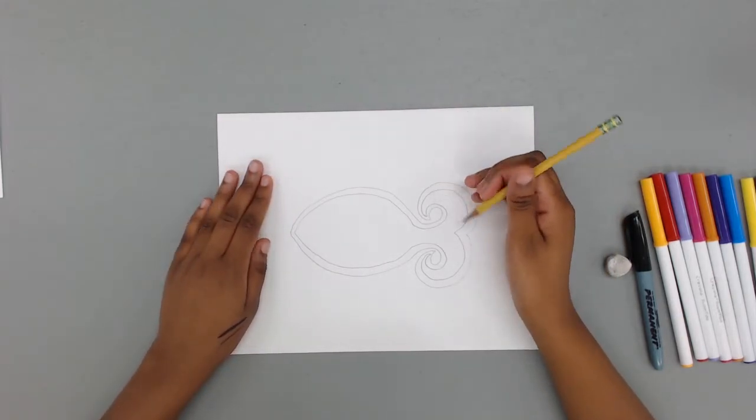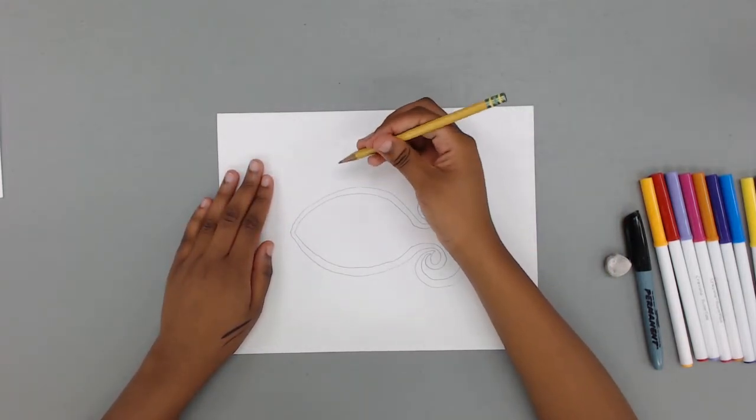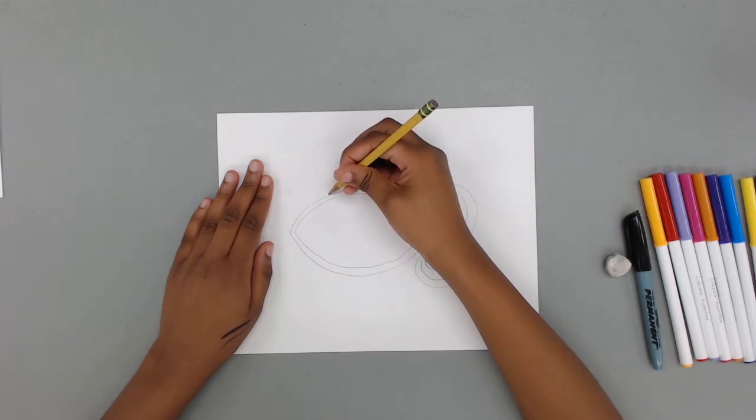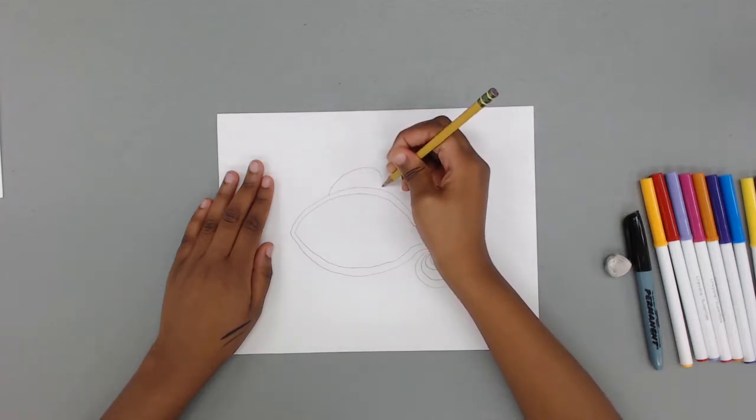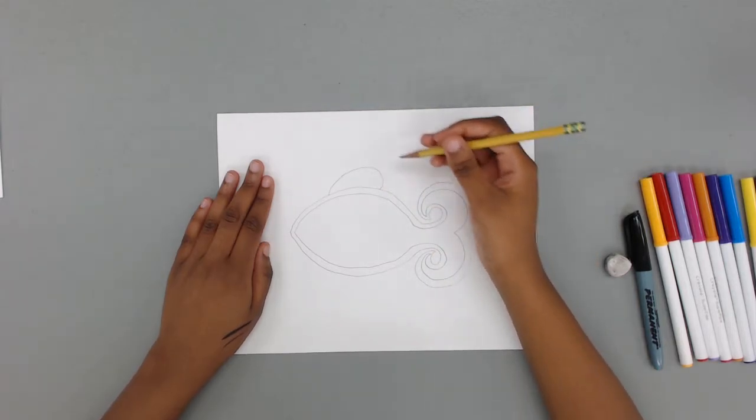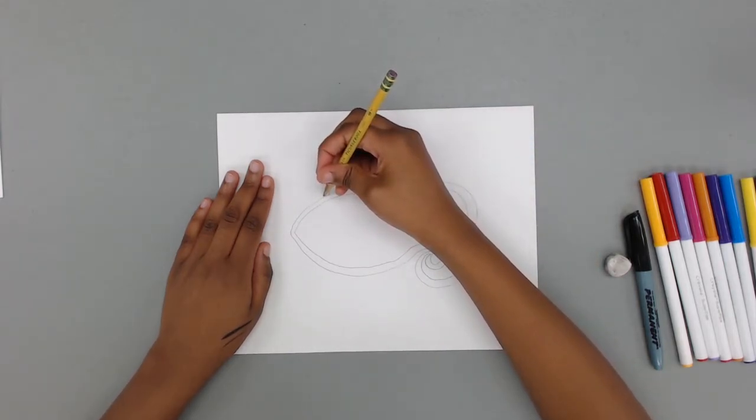Now we're going to add the fins of our fish. We're going to be using a shape that looks like half a heart on the top of our fish's border. And don't forget to make your border around that object.